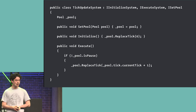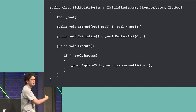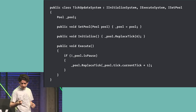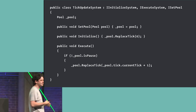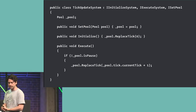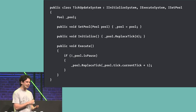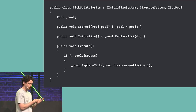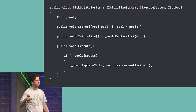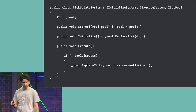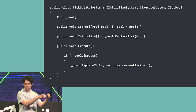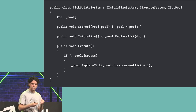Here's the tick update system. It's an initialize system — in the initialize method we replace the tick with zero, starting from the beginning. It is also an execute system, meaning it runs every frame. If we are not paused, we set the tick to current tick plus one; otherwise we do nothing. This way we can implement pausing inside the game without pausing the Unity Editor — we control the time.